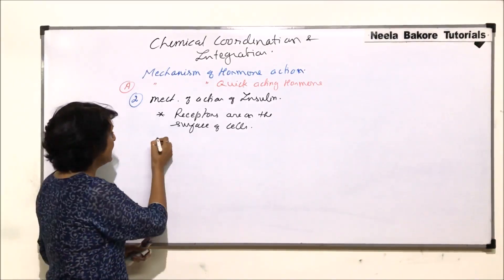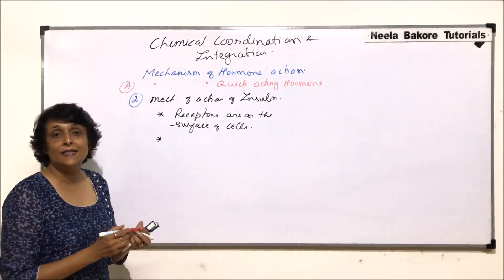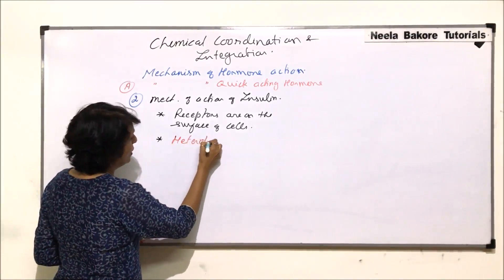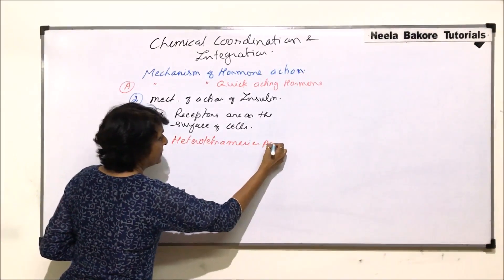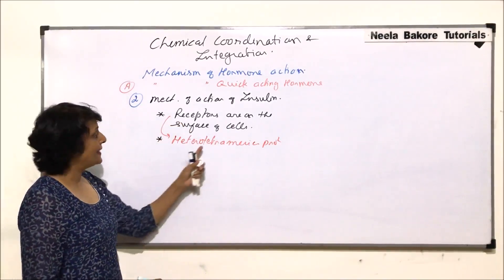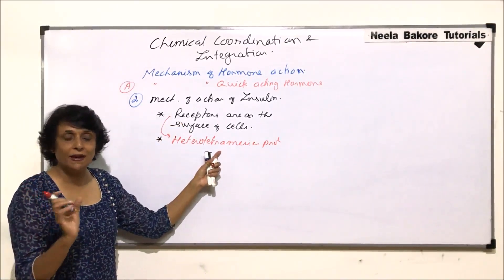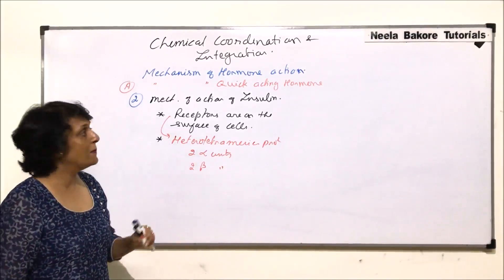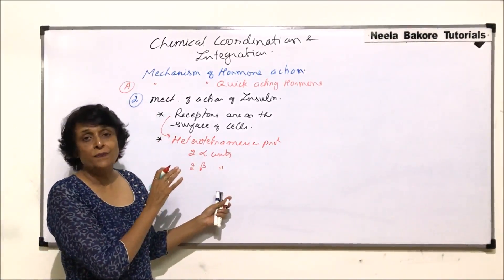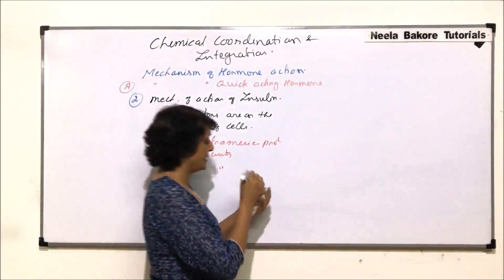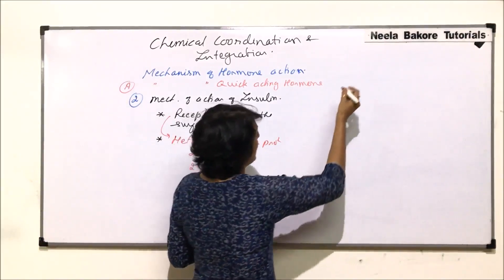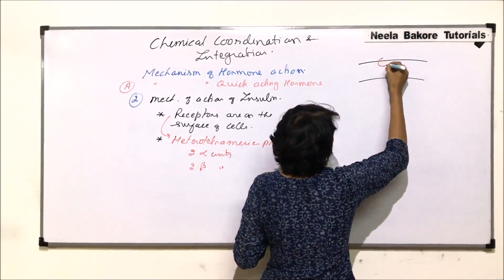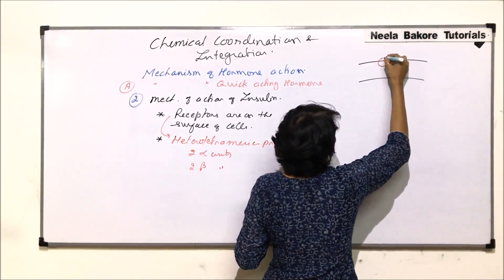The receptor of insulin is a heterotetrameric protein. Tetrameric means there are four polypeptide chains — two alpha units and two beta units present in the membrane. To understand how these alpha and beta units are placed in the plasma membrane, we need to draw the structure.